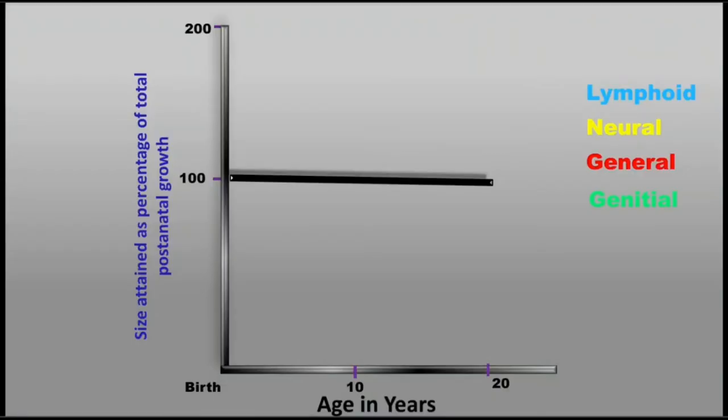In today's video we're going to discuss Scammon's Curve of Growth. It is based on the principle of differential growth in the human body, which means that not all organs grow at the same time throughout life. Different organs are growing at different rates, to different amounts, at different times. He classified the tissues in our body into four types.